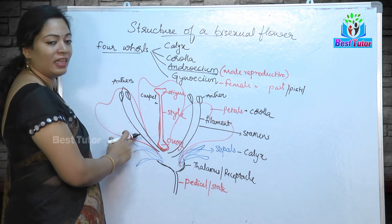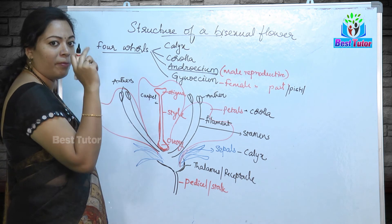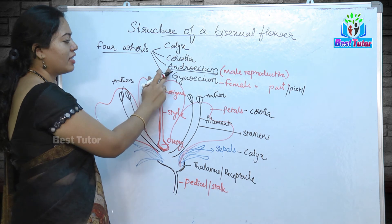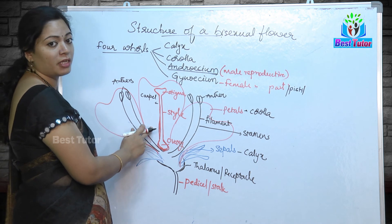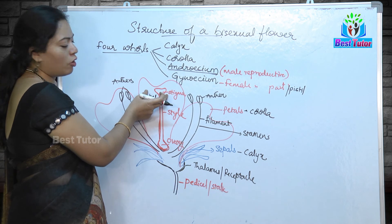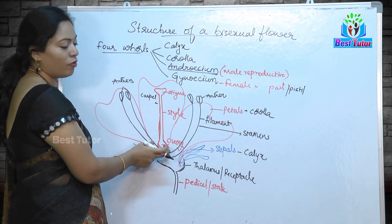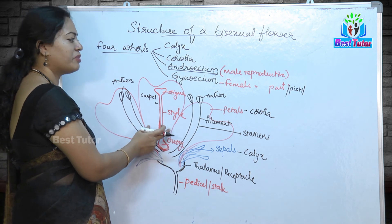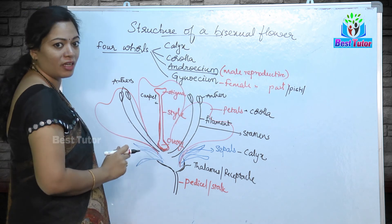Androecium consists of filamentous structures where the long thread-like filament bears a bilobed anther. These stamens collectively form the androecium, the male part of the flower. The gynoecium is the female reproductive part, having a knob-like stigma at the top connected to a tube-like style, with ovary at the base. These are the three main parts of the gynoecium, also known as pistil. All the carpels together form the gynoecium.